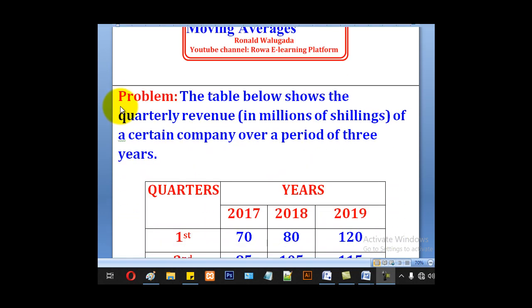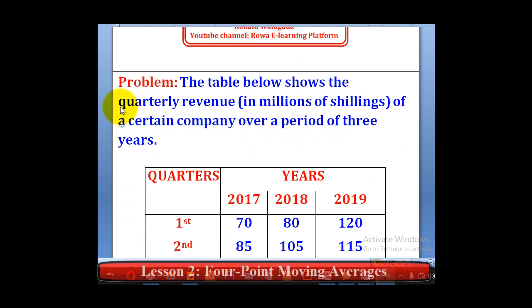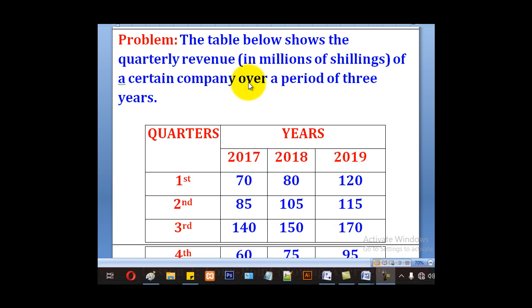In the previous lesson we learned how to plot and calculate 3 point moving averages. Now we are going to look at 4 point moving averages. We are given a problem having a table of the quarterly revenue in millions of shillings of a certain company over a period of 3 years.